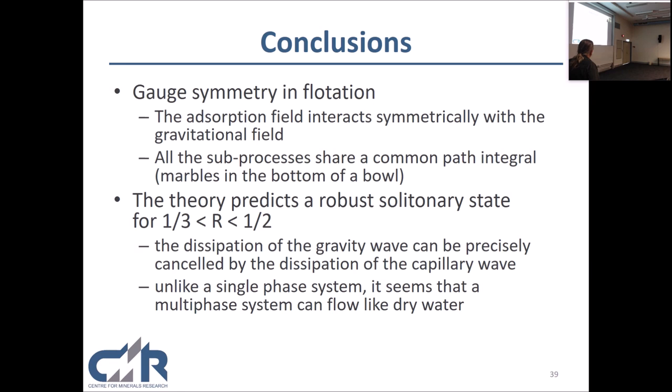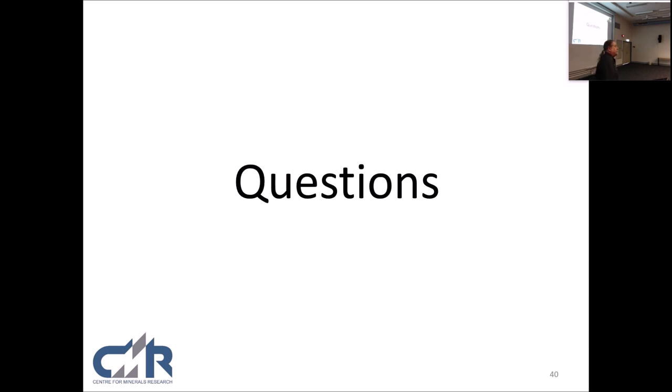So in conclusion, gauge symmetry. The adsorption field interacts symmetrically with the gravitational field, and all the subprocesses share a common path integral. So it's like marbles in the bottom of a bowl. The more you shake them around, they move around, but almost all of them stay in the middle. It's an incredibly stable point, and it will do its best to sit in that zone of soliton behavior, if you like, until we come along and force it out of it. So, you get a robust soliton state, and unlike a single-phase system, it seems that once you put two phases together, you can indeed have water behave like it's dry. Thank you very much.